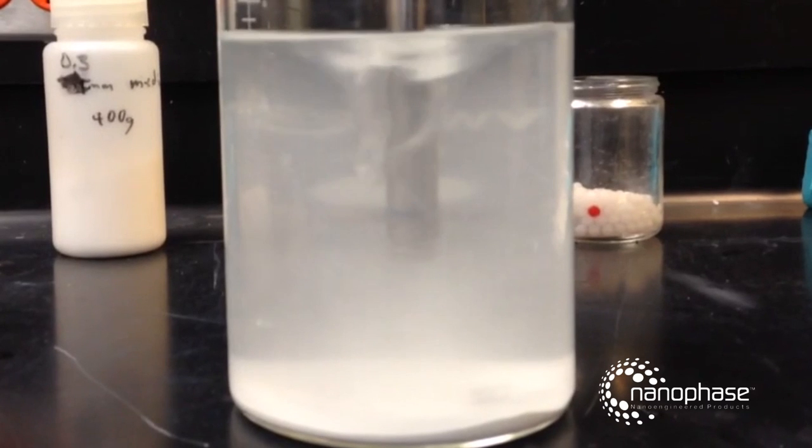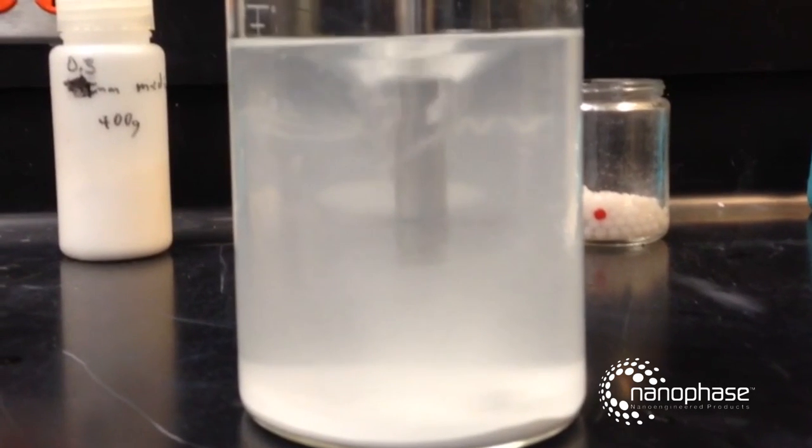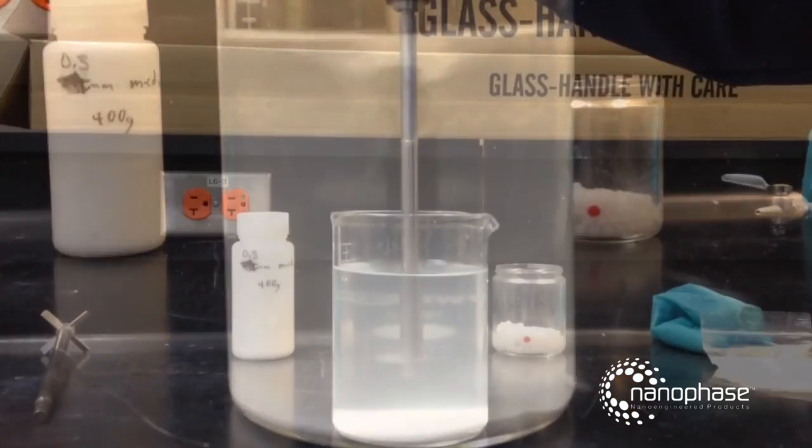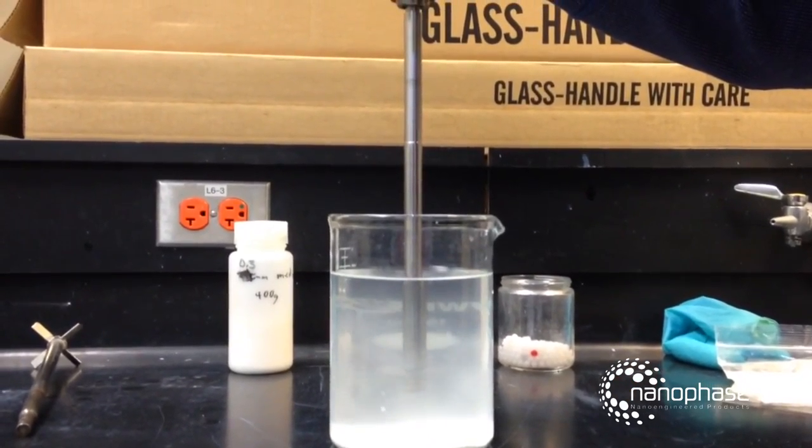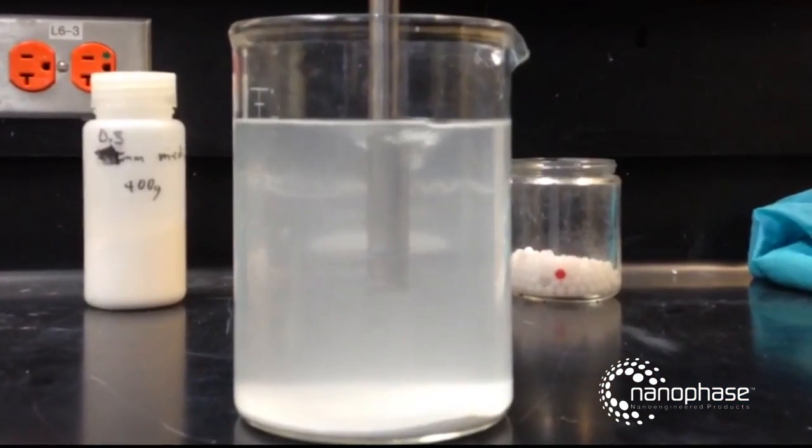A center-mounted mixer in an unbaffled container will tend to swirl the liquid around in an angular direction, creating a large vortex. In this configuration, there is very little turbulence or upward flow to lift the particles off the bottom, making it ineffective at re-suspending solids.